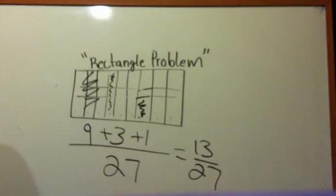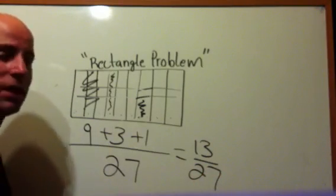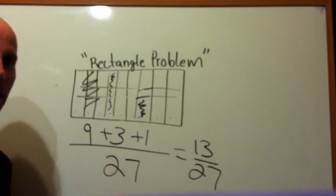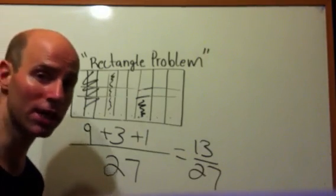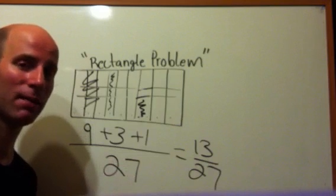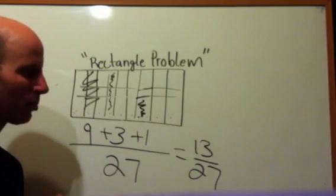Now, sometimes, so that says there that I'm giving you 13 out of 27 of my candy bar. A lot of times these problems say approximately what portion of the candy bar am I giving you? Approximately.